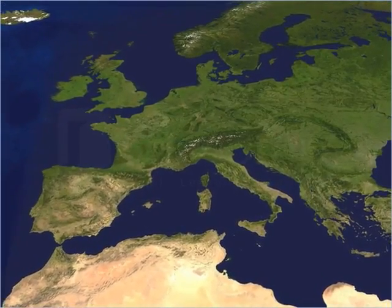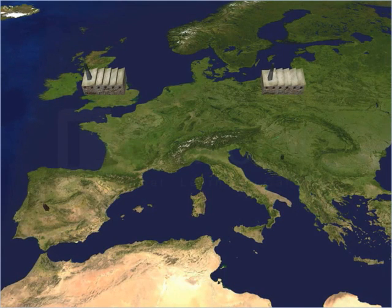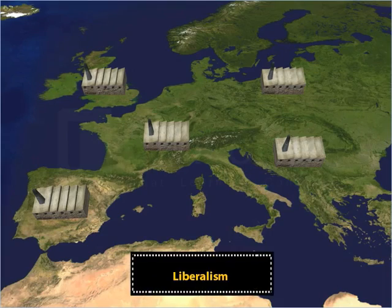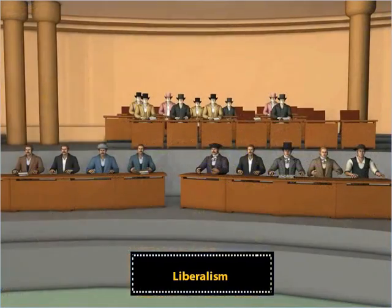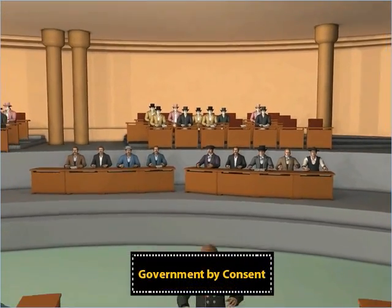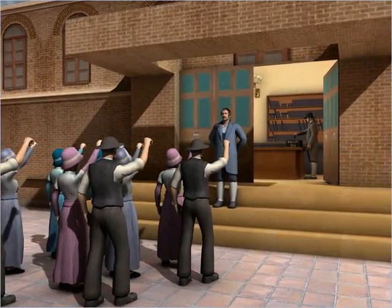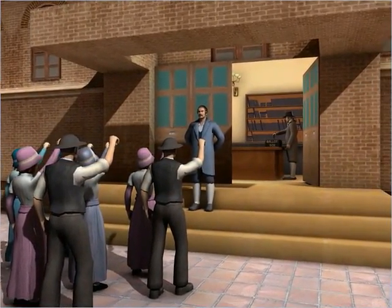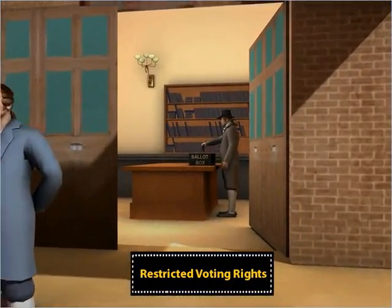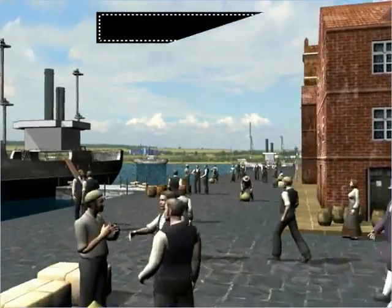The Napoleonic Code established equality before law and the right to property, and was exported to states under French control. By the mid-18th century and early 19th century, the spread of industrialization to all parts of Europe brought about ideas of liberalism. Liberalism meant freedom and equality for all individuals and a government by consent.